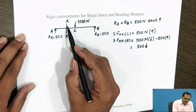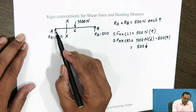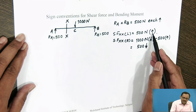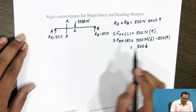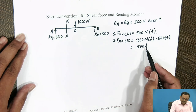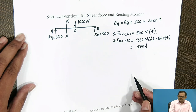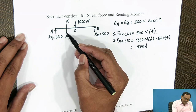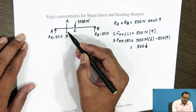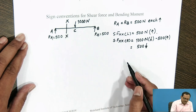Shear force at section XX: to the left side, 500 N acting vertically upward; and to the right side, acting vertically downward. Therefore, shear force at section XX — considering the left side of the section — all upward forces are considered to be positive.